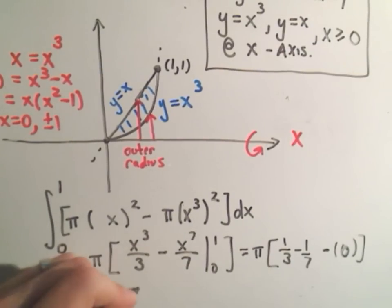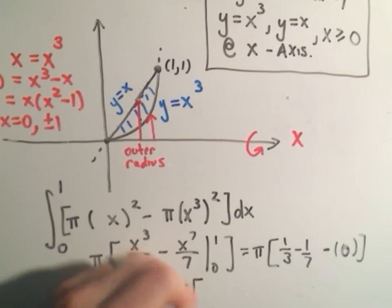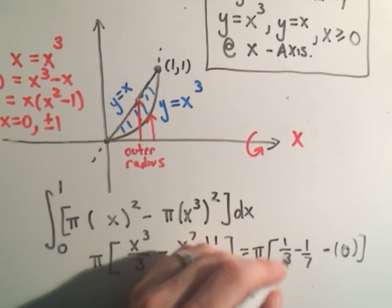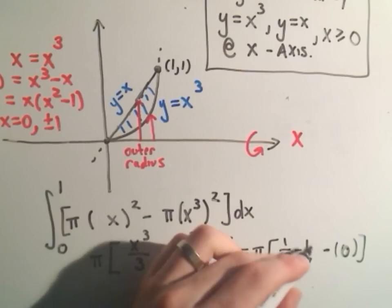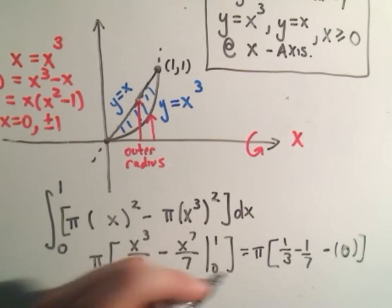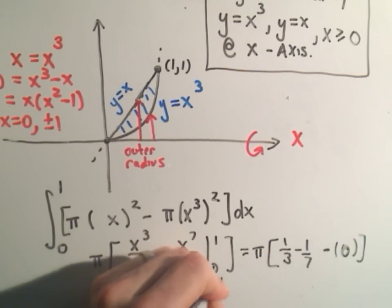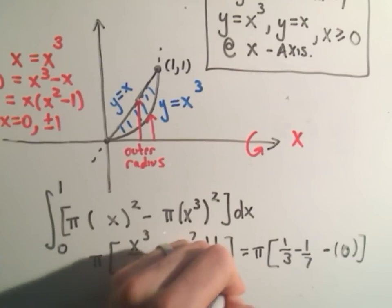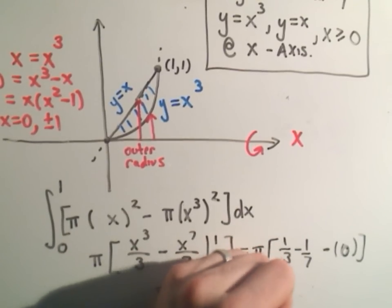So our answer here will be pi times, get common denominators, multiply top and bottom of this one by seven, top and bottom of this one by three.